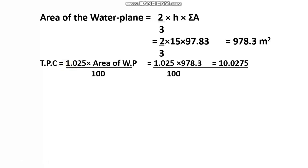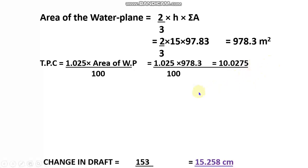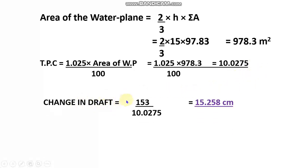Now we need to find the change in draft when mass is added. First, find the TPC — tonnes per centimeter immersion — using the formula: TPC = 1.025 × (water plane area) / 100. Substituting values gives TPC = 10.0275 tonnes per centimeter. It is given that 153 tonnes is added to the vessel. Since each centimeter of immersion requires 10.0275 tonnes, the change in draft = 153 / 10.0275 = 15.25 centimeters.